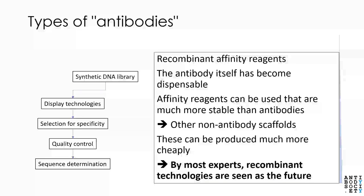To go one step further, once these technologies are in place, we don't even need the antibody anymore. One can use synthetic DNA libraries encoding other scaffolds, use the same display technologies, selection for specificity, quality control, and sequence determination. Such affinity reagents can be much more stable than antibodies and can be produced more cheaply. Most experts agree that these recombinant technologies on the whole are seen as the future.